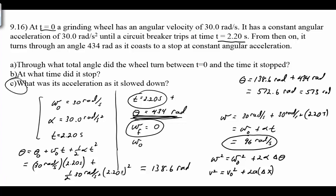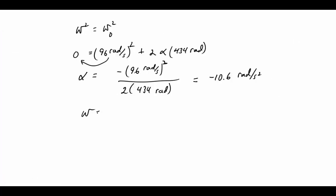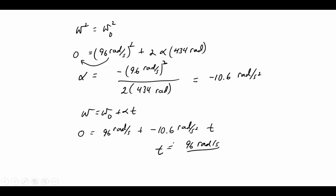For the time it takes to stop, using omega equals omega naught plus alpha t: 0 equals 96 radians per second plus negative 10.6 radians per second squared times t. Solving, t equals 96 over 10.6 radians per second divided by radians per second squared, where the radians cancel since they're dimensionless, leaving seconds.